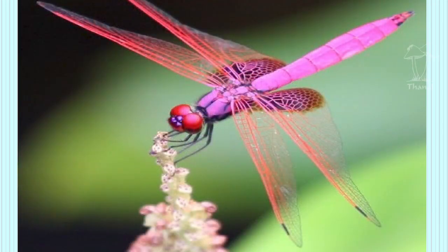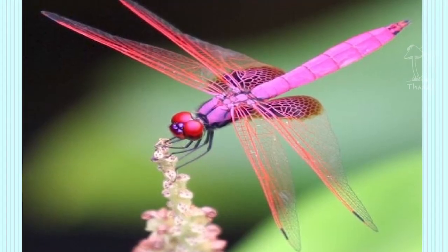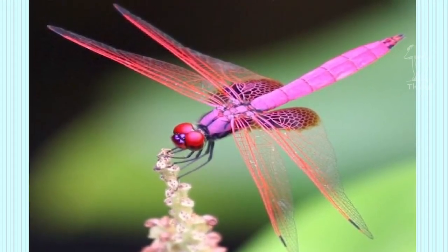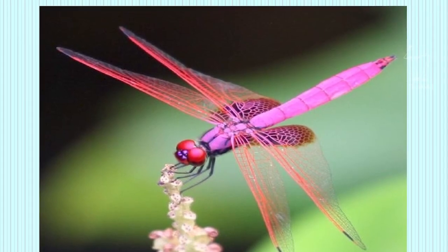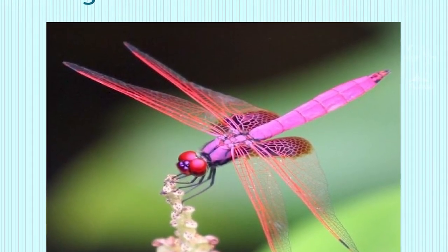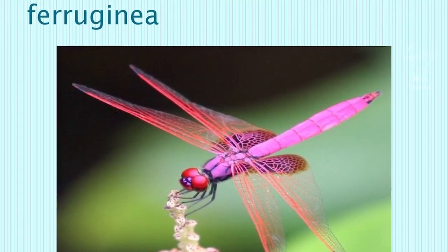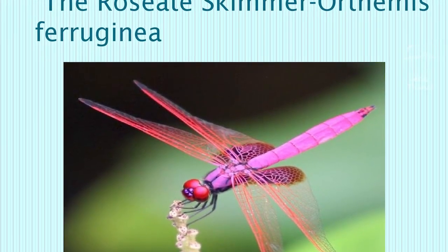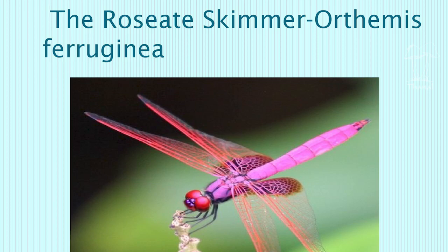Everybody knows the dragonfly. It is useful because it catches all the mosquitoes and small insects flying around, reducing the number of flying insects. You see them swarming around in wet areas because mosquitoes rise from the water, and the dragonfly will zoom in and catch all those things. So it is very useful for us.